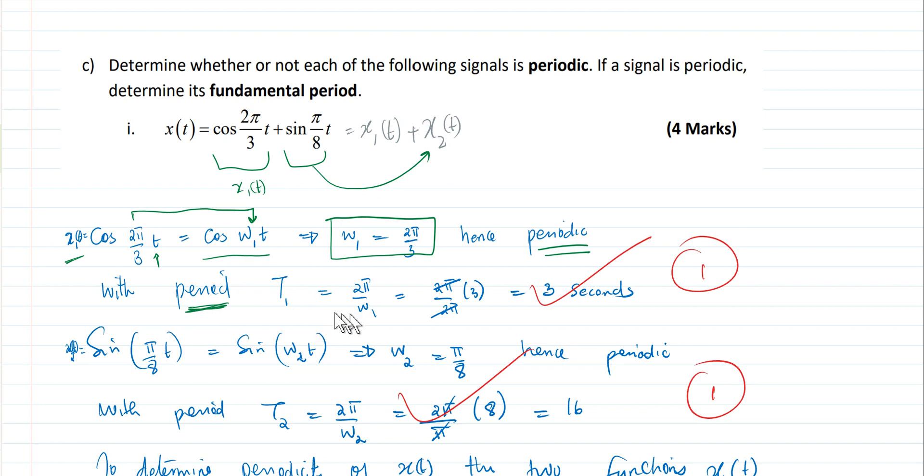And we know that the period is always defined as 2π times the reciprocal of the angular frequency. So it is 2π over ω1. And since we know what our ω1 is, we can evaluate that, because it's 2π divided by 2π/3. This becomes 2π times 3 over 2π, which becomes 3 seconds.